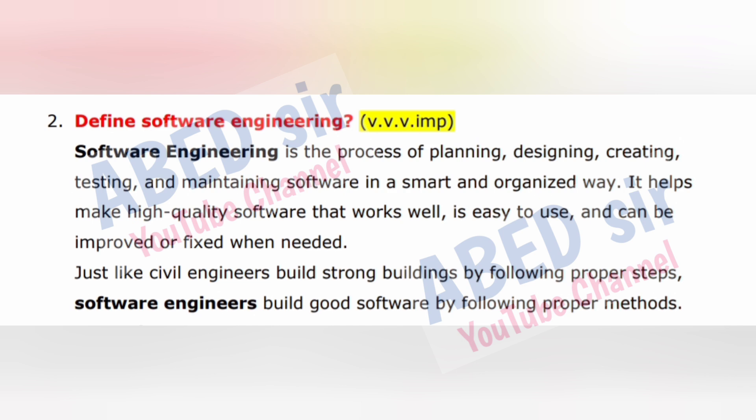The next important short question is: Define software engineering. Software engineering is the process of planning, designing, creating, testing and maintaining software in a smart and organized way. It helps make high-quality software that works well, is easy to use, and can be improved or fixed when needed. Just like civil engineers build strong buildings by following proper steps, software engineers build good software by following proper methods.